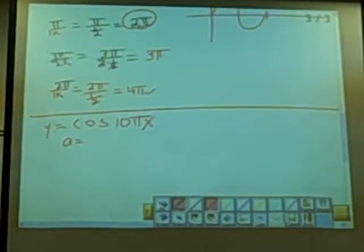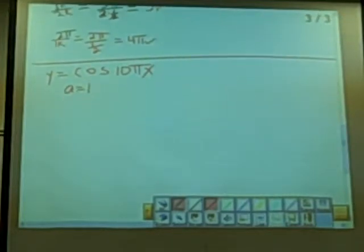But a, we know it's going to be what here? It's just going to be 1. And k is going to be 10π.